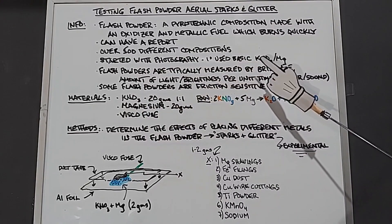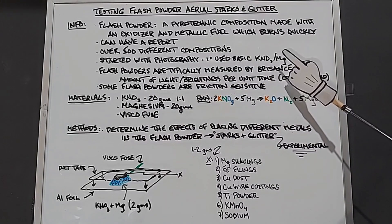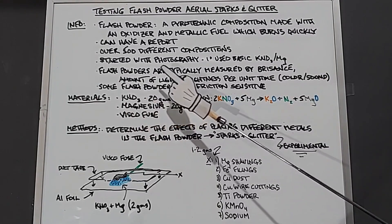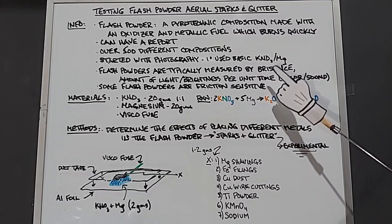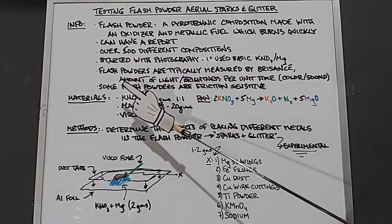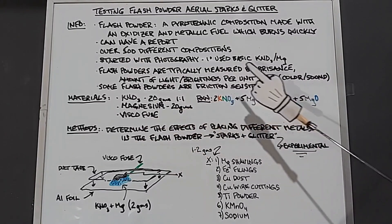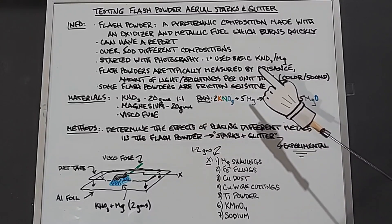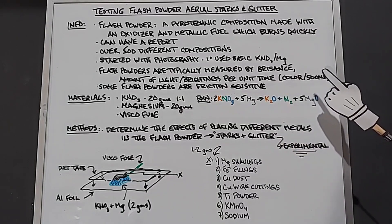They basically used potassium nitrate and magnesium at that point, and that's what I'll be using. When testing the strength of flash powders, it's typically measured by the brisance of the flash powder, which is the ability to break something, the amount of light or brightness produced per unit time. The strength can also be tested by the color they make or the sound they make or report.